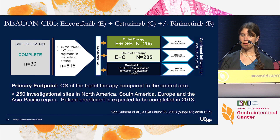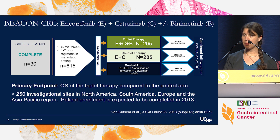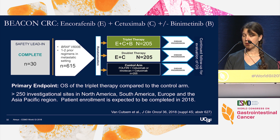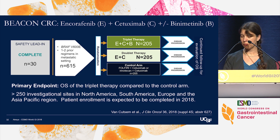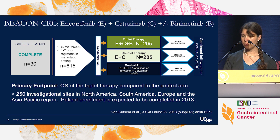Meanwhile, the BEACON CRC Phase III study of encorafenib plus cetuximab with or without the MEK inhibitor binimetinib is being compared to a control arm with either FOLFIRI plus cetuximab or irinotecan plus cetuximab. The randomized portion of the study will have 615 patients — 205 per arm — making this by far the largest clinical trial for this population. The primary endpoint is overall survival of the triplet therapy compared to the control arm. The study is open at over 250 sites worldwide and expected to complete enrollment late this year.